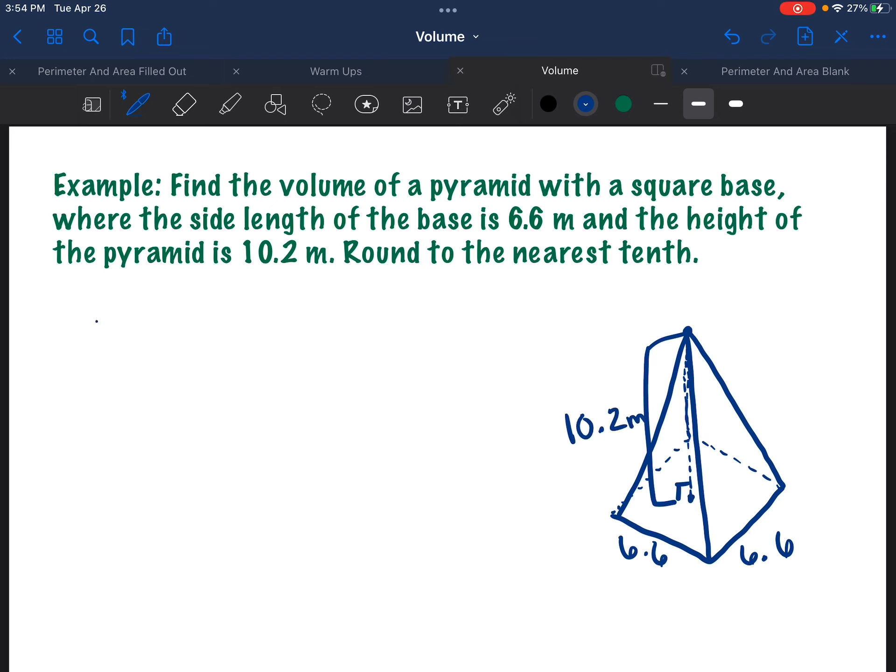And we know that our volume of a pyramid is going to be found by one-third times the length times the width or the area of the base, which is length times width times height. So we're going to have one-third times 6.6 times 6.6 times 10.2, which is going to give us 148.1 meters cubed. And that's your answer.